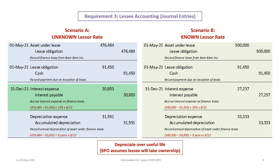At December 31st, 2021, interest expense needs to be recorded and interest payable accrued. To accrue interest, take the present value of $476,484 minus the initial payment (which all goes to principal), times 12% (the effective interest rate), times 8/12 months — prorated from when the lease was entered into in May. In scenario B, the same debit and credit accounts apply, but the calculation uses $500,000 minus the payment, times 10%, times 8/12. Scenario A yields interest expense of $30,803; scenario B yields $27,237.